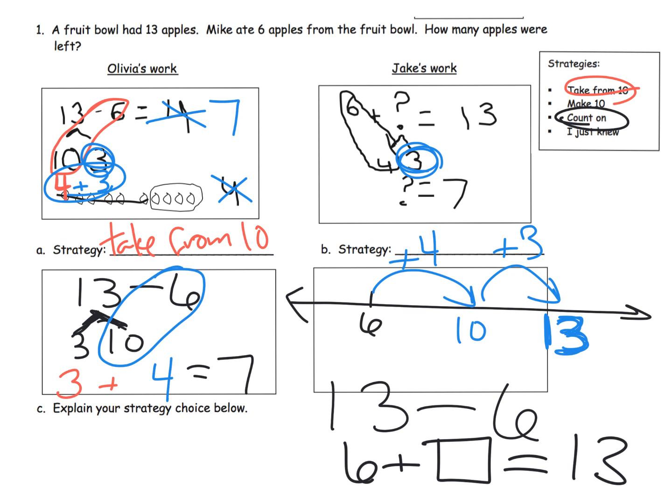And so we can see that Jake says, well, if you start at 6 and add 4, you get 10, plus 3 more, you get to 13. So that means 4 plus 3 is 7. And that's why he's got that 4 plus 3 thing. And that's why he's showing us that the answer is 7. He used the count on method.